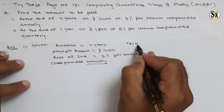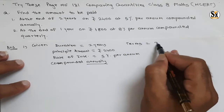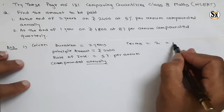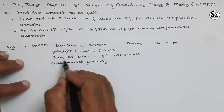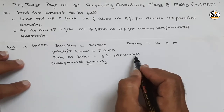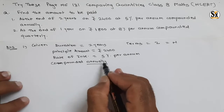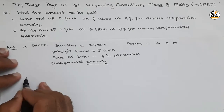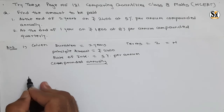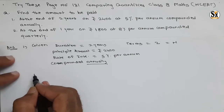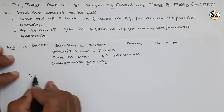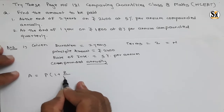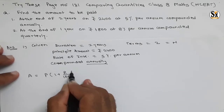Since it is compounded annually, there will be two terms for two years, so n will be two. Rate of interest is five percent per annum, and as it is compounded annually it remains the same. The formula to calculate amount is: A = P × (1 + r/100)^n.